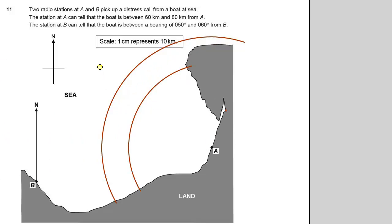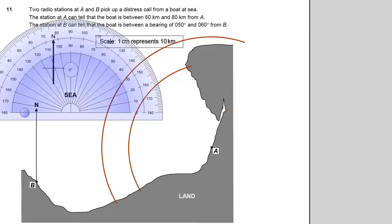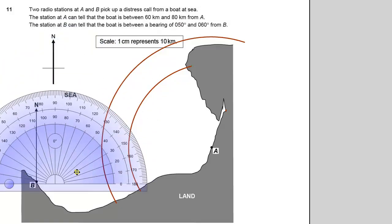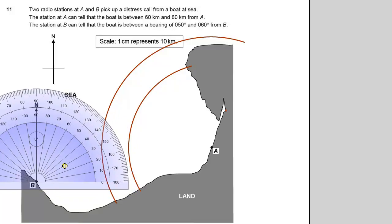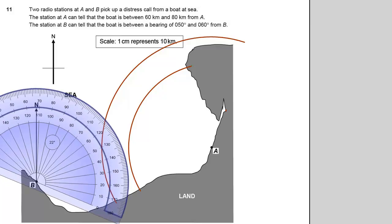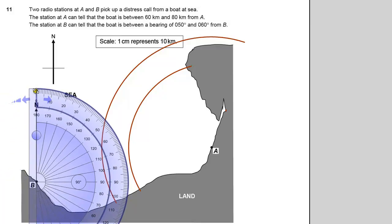Now I need to mark on the angles that it could be from B, so I'll need a protractor for that. And it's on a bearing of 50 and 60. Bearings are always measured from north. So we need to move our protractor around to north.